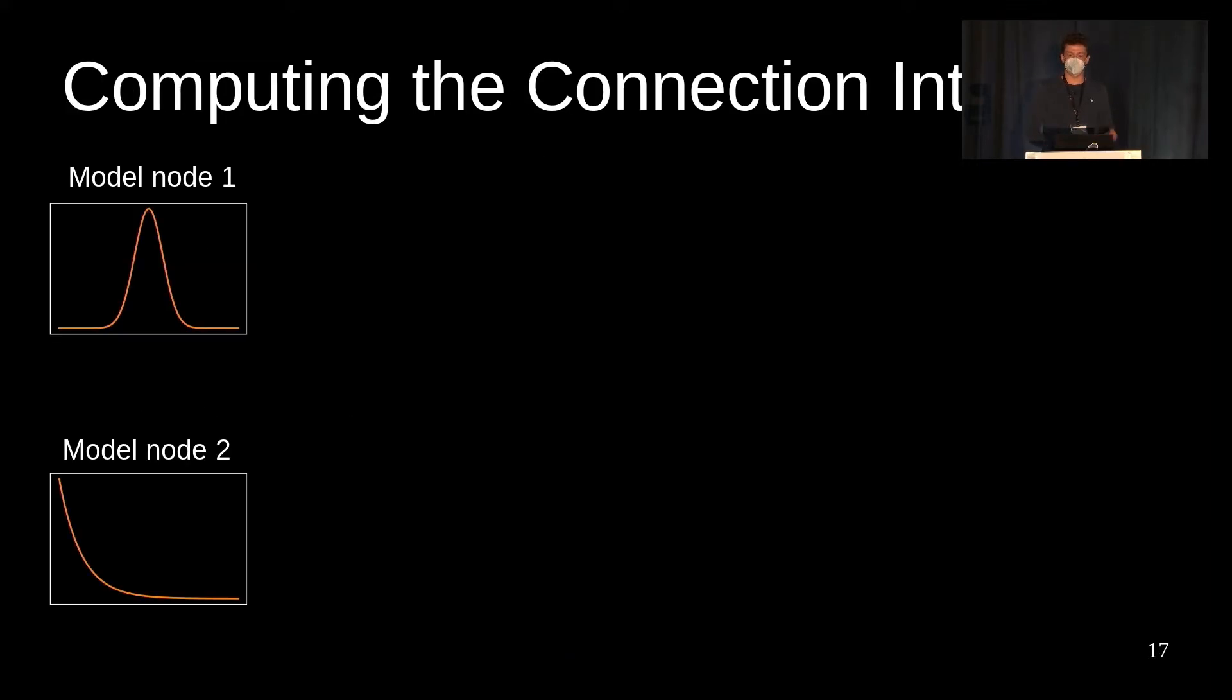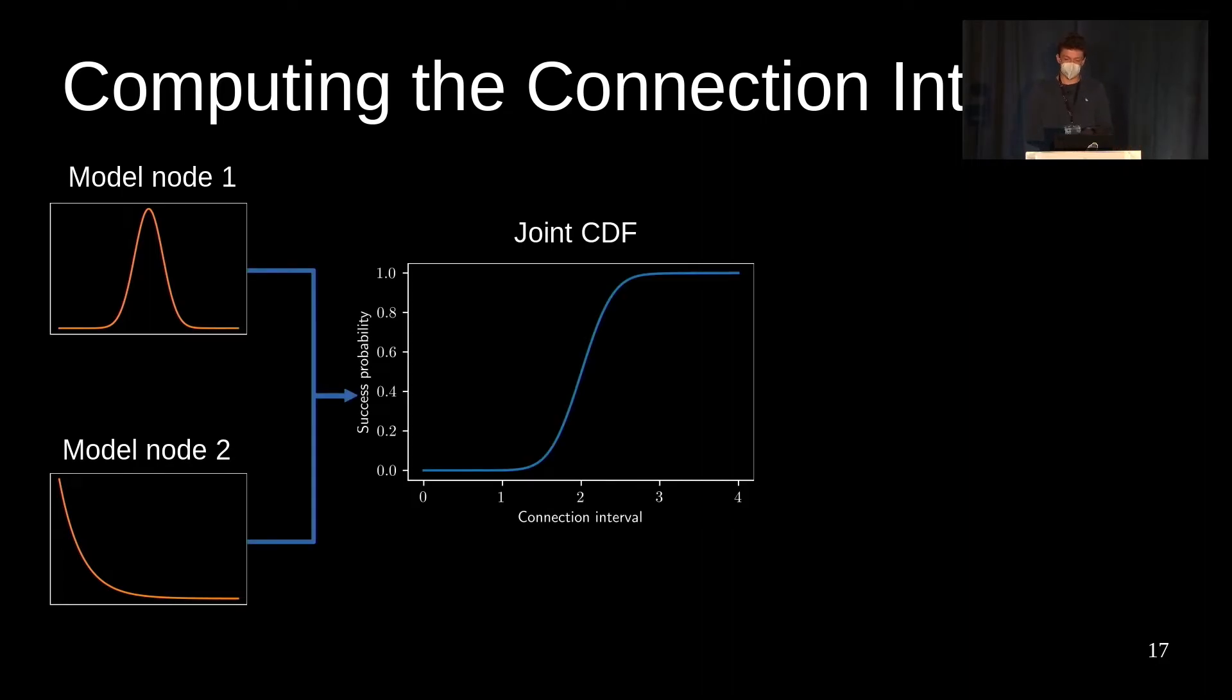Having the two distribution models, nodes can compute the joint cumulative distribution function. What this function tells us is the probability that the charging times of both devices are less than the value here on the x-axis. So for any connection interval, we can now compute the probability that the two devices can actually wake up and communicate. This is pretty useful, but it's not yet what we are looking for.